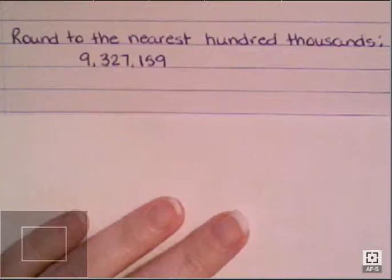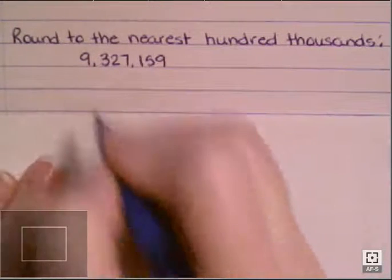Hi. We want to take a couple moments to look at rounding and some examples to make sure that we're all on the same page. So this first one, I want to round to the nearest hundred thousands. So what I need to do is I need to actually find that place.